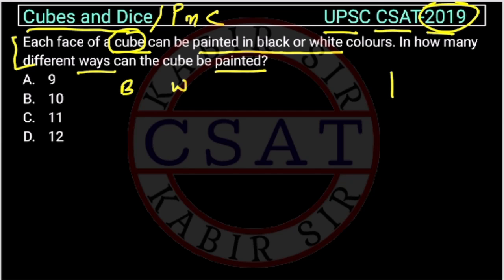This is a cube. It can be painted either black or white. Suppose all six faces — and a cube has six faces — are painted black with no white color. In that case, there is only one way it can be done.